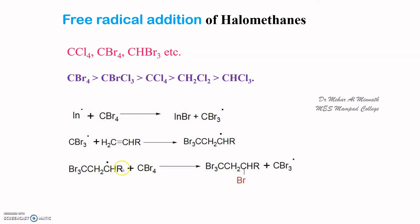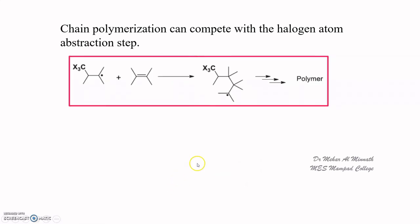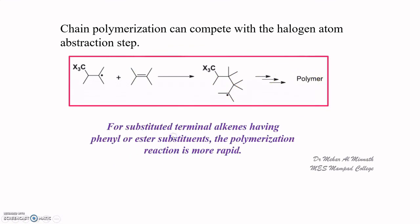In certain cases the abstraction of a halogen by the free radical competes with polymerization. Instead of abstracting a halogen from the halomethane, the free radical can combine with another alkene molecule, forming a dimer which can grow into a trimer and eventually a polymer. This polymerization reaction competes with halogen abstraction and is particularly seen in compounds with substituted terminal alkenes bearing phenyl or ester substituents, where the reaction is also quite rapid.